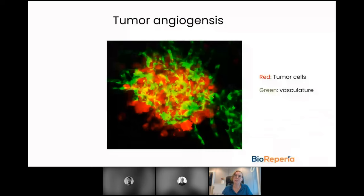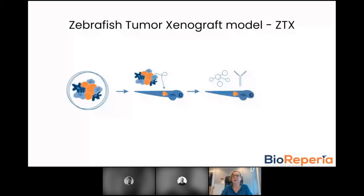This is basically what a microtumor would look like after three days of growing in the zebrafish. Once the cells have been implanted and the microtumor has formed, we can also start treating with anticancer drugs to evaluate possible anticancer effects on both the primary tumor and on metastases.